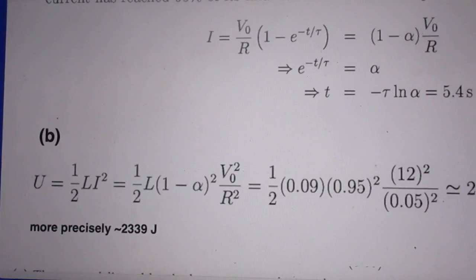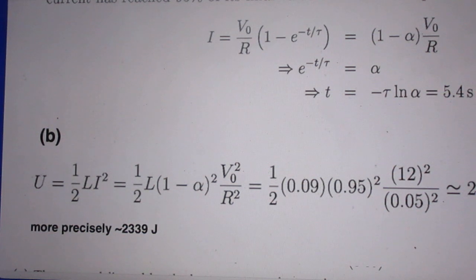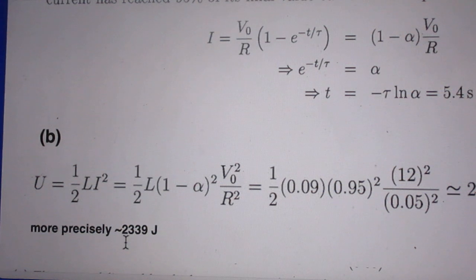Now B. The total energy in a self-inductor is 1.5 Li squared, also covered in my lectures. So if you work that out, you will find approximately 2300 joules. More precisely, but that's not so very important, it is 23339 joules.